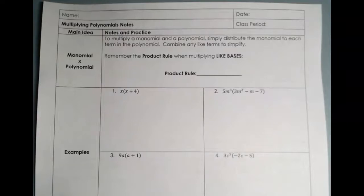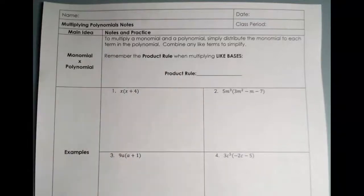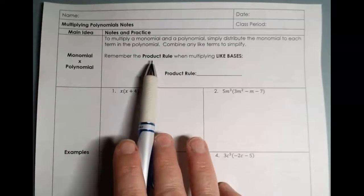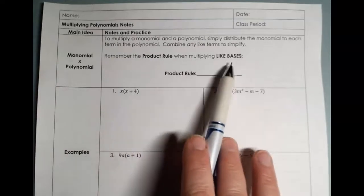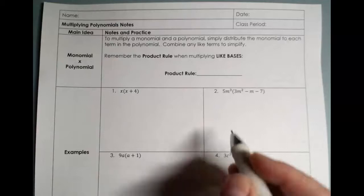The first topic we're going to talk about is multiplying a monomial times a polynomial. This is the easiest one for multiplication. You're going to distribute the first term through the parenthesis that comes after it. One thing you have to remember when working with multiplication is something called the product rule — when we're multiplying like bases, what happens to their exponents?